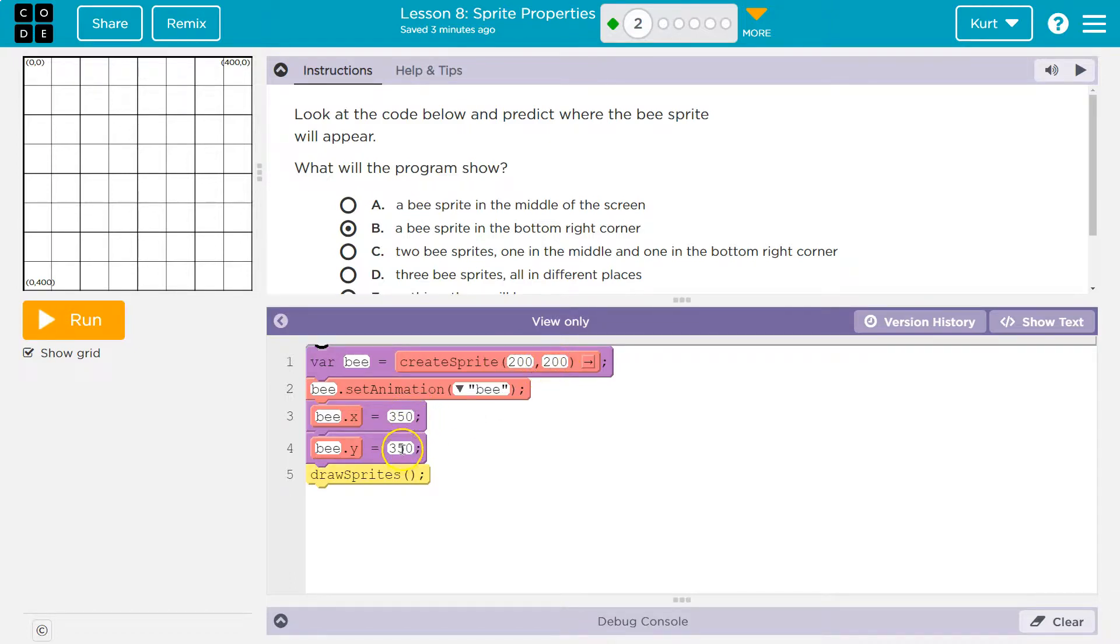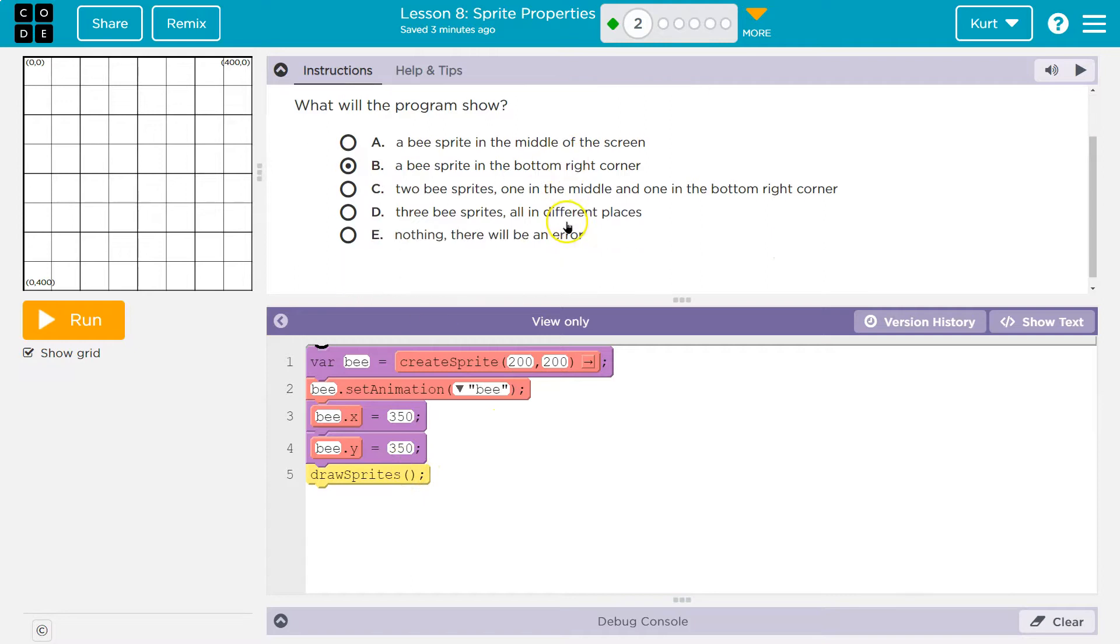Oh wait, I'm changing it. We never get to see that though. It asks predict where the B will appear. The only spot it's going to appear is 350 350.